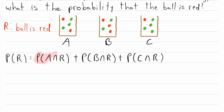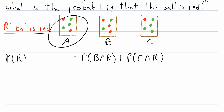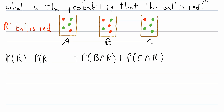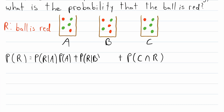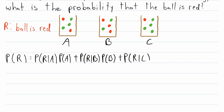What is the probability that the chosen ball is red and from bag A? We can rewrite this as a conditional probability. Since the bag is what changes in each probability, we take the particular bag as the given condition. So we replace P(A intersect R) with P(R | A) times P(A), and similarly P(B intersect R) becomes P(R | B) times P(B), and P(C intersect R) becomes P(R | C) times P(C).